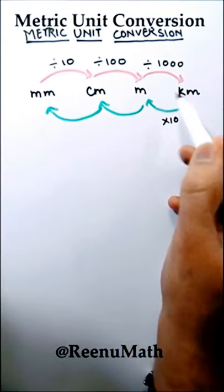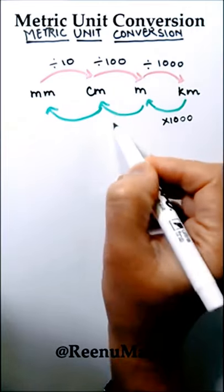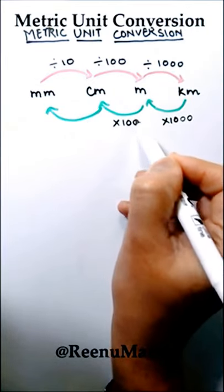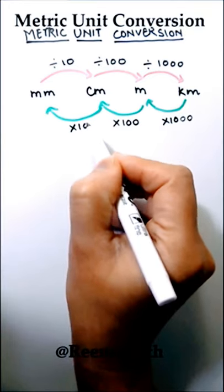Similarly when converting kilometer to meter we need to multiply by 1000. From meter to centimeter multiply by 100 and from centimeter to millimeter multiply by 10.